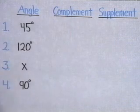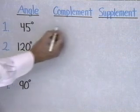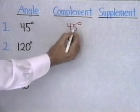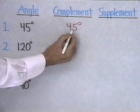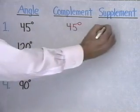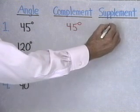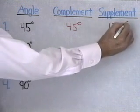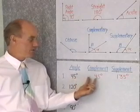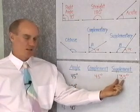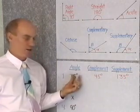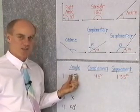The complement is the angle I would add to 45 degrees to end up with 90 degrees, so that is 45 degrees — which is 90 minus 45. For the supplement, that's the amount I would add to 45 degrees to get 180 degrees, so that's 135 degrees. The complement of 45 is 45, and the supplement is 135. 135 plus 45 is 180, and 45 plus 45 is 90.